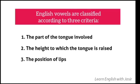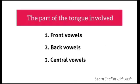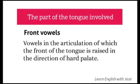So let's discuss the first classification. Based on the part of the tongue involved, the first type is front vowels, the second is back vowels, and the third is central vowels. The first classification — front vowels — refers to vowels in the articulation of which the front of the tongue is raised in the direction of the hard palate.